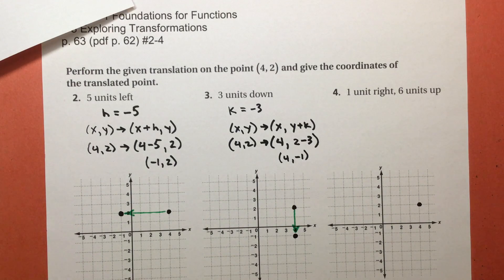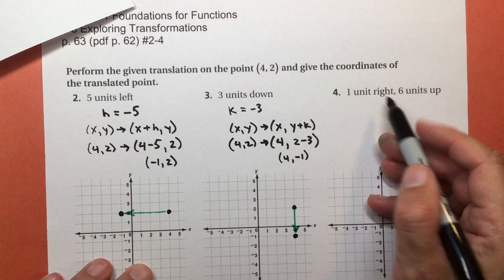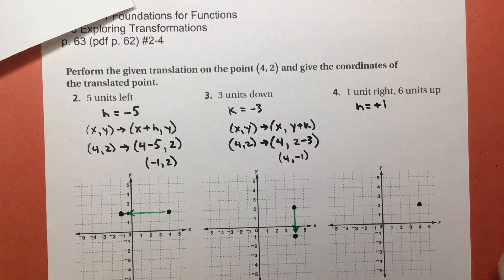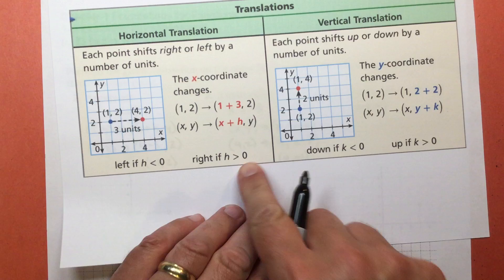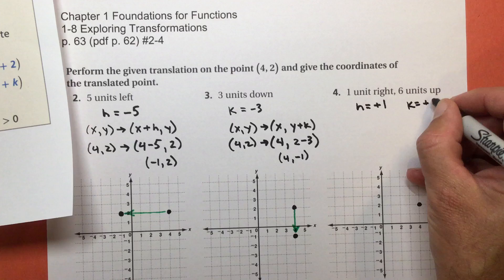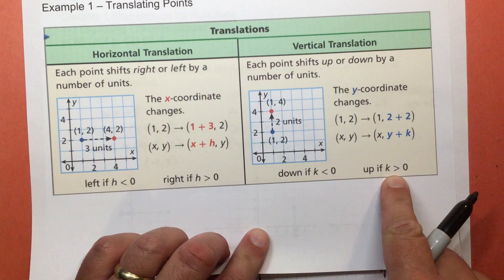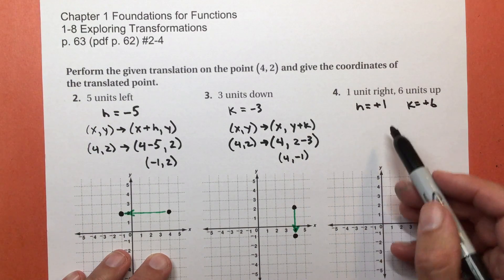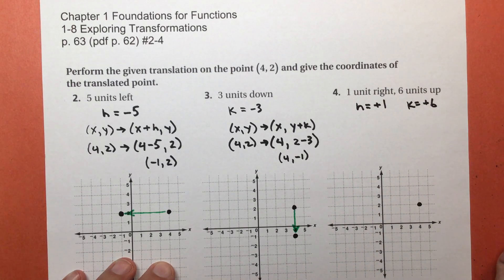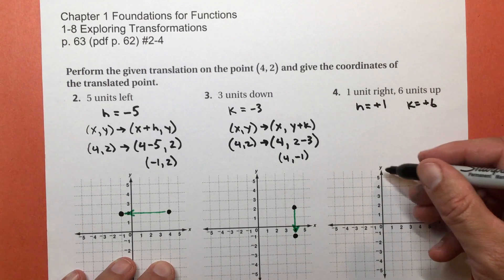Finally, for this video, I'm going to do 1 unit to the right and 6 units up. So 1 unit to the right tells me that my h is going to be positive 1. Because to the right, h is positive. 6 units up, my k is going to be positive 6. So if I'm going to go up, k is positive. Now in this case, I'm doing both. I'm moving it to the right and up.